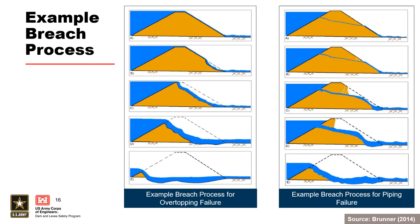The breach process for overtopping and internal erosion are described by Bruner 2014 as it relates to dam break modeling using HEC-RAS. For an overtopping failure, overtopping erosion and head cutting begin on the downstream side and progress through the crest. For a piping failure, erosion and head cutting begin on the downstream side as a result of flow exiting the pipe. As the piping hole grows larger, material above the hole begins to slough off and fall into the moving water. Head cutting and material sloughing continue to move toward the upstream side while the piping hole continues to grow simultaneously.